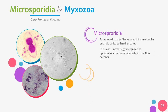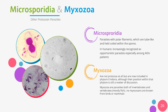We also have the other protozoan parasites, which are the microsporidia and the myxozoa. Microsporidia are parasites that have polar filaments. The polar filaments are tube-like and held coiled within the spores. In humans, these parasites are increasingly recognized as opportunistic parasites, especially among AIDS patients. We also have the myxozoa. Myxozoa are actually not protozoa at all, but they are now included in the phylum Cnidaria, although their position within the phylum is still a matter of discussion. Myxozoa are parasites of both invertebrates and vertebrates, mostly fishes.